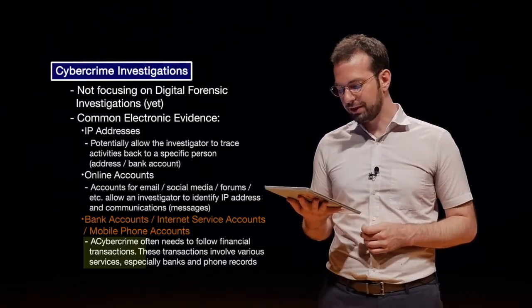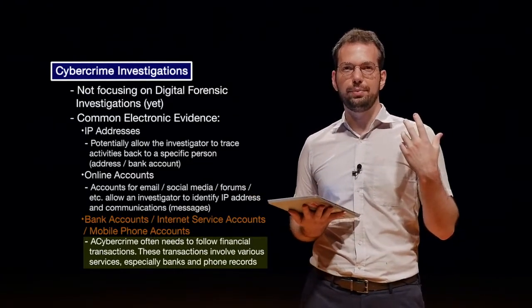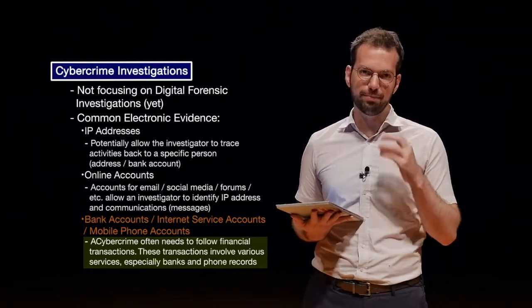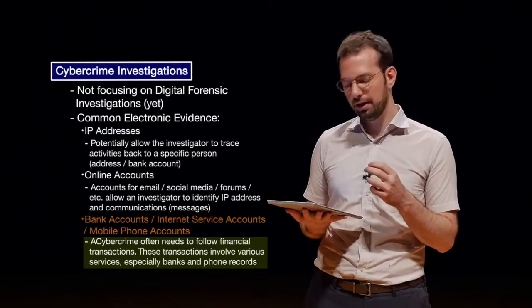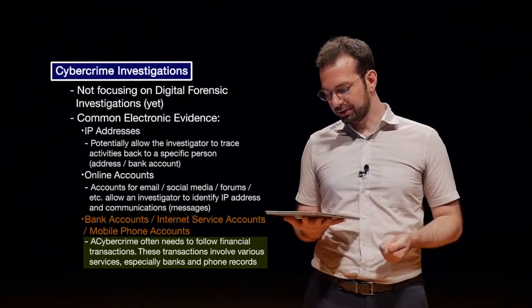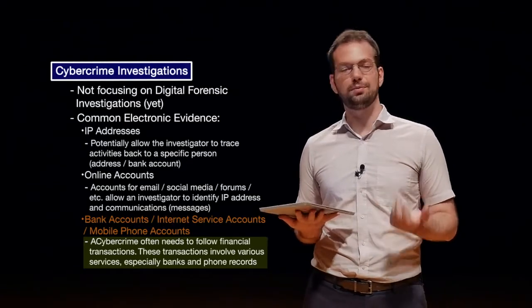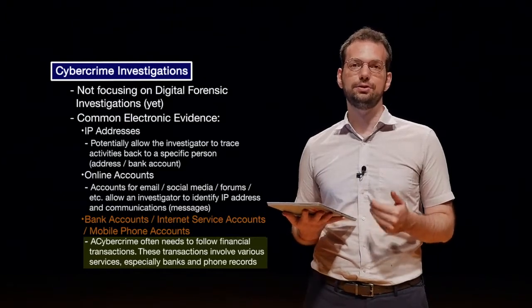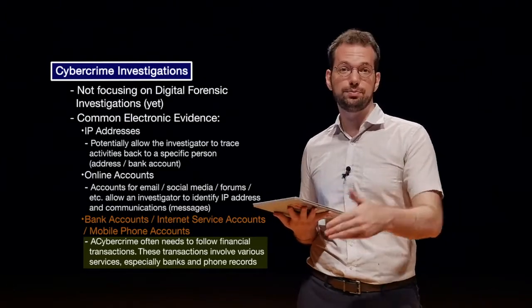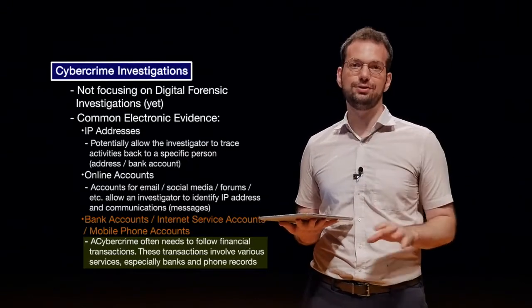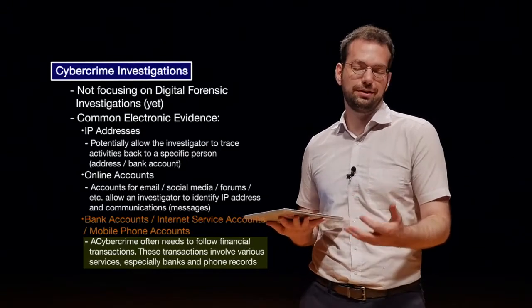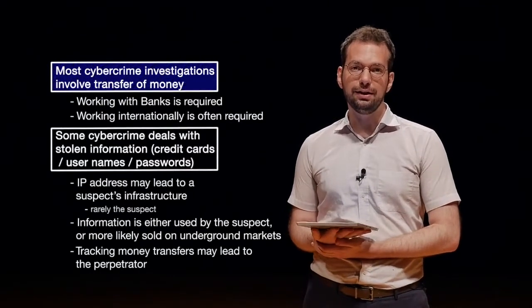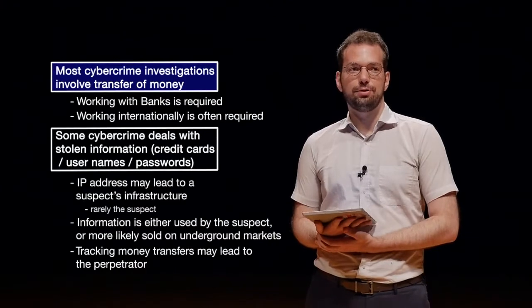Cybercrime often needs to follow financial transactions — basically follow the money. Hackers find it relatively easy to hack, but whenever they try to get the money out, that's when most people get caught. These transactions involve various services, especially banks and phone records, which we can trace because there is a lot of auditing for any type of financial services. We can normally trace those audit records to find out who transferred it, where it transferred to, and who withdrew or exchanged the money. Most cybercrime investigations involve a transfer of money, and that's really how we find most criminals.